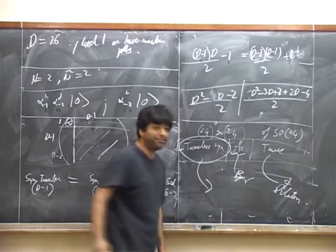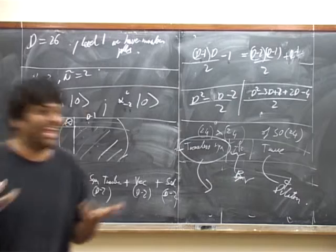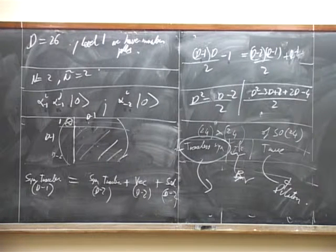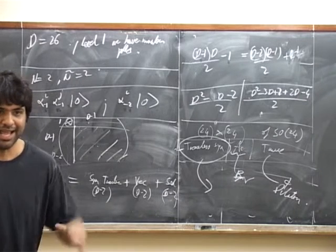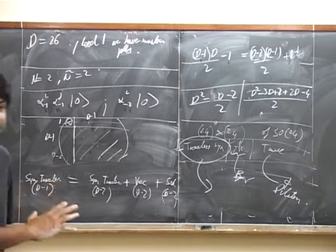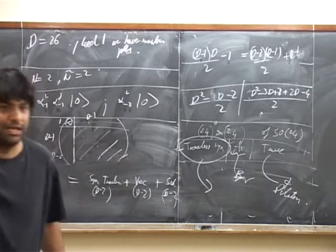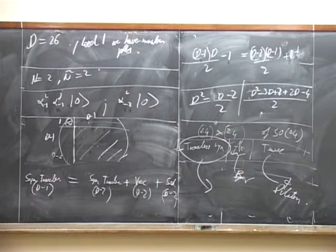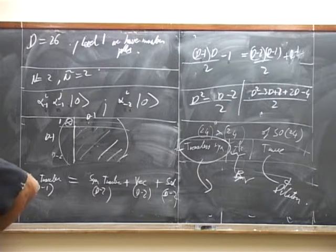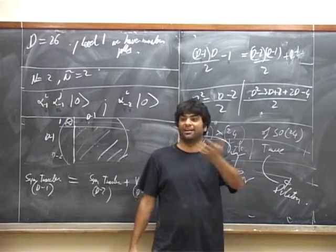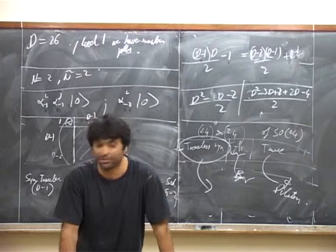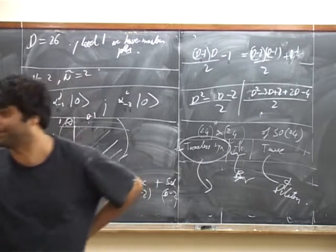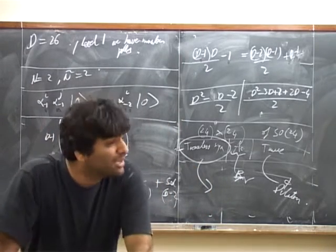The antisymmetric tensor field has a name: it's called the B-field, and we'll encounter it many times as we go along in string theory. The scalar field also has a name — it's called the dilaton — and we'll encounter it even more frequently. But the thing I want to focus on is the traceless symmetric tensor. It is very interesting because if you take Einstein gravity and linearize it — linearize it with small fluctuations — and ask in what representation the physical excitations of the graviton transform in d dimensions, the answer is the traceless symmetric tensor representation of SO(d-2).